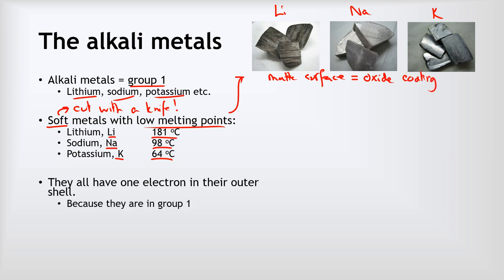Okay, now all of the alkali metals have just one electron in their outer shells, and the reason why is because they're in group one, and remember the group number tells us the number of electrons in the outer shell.